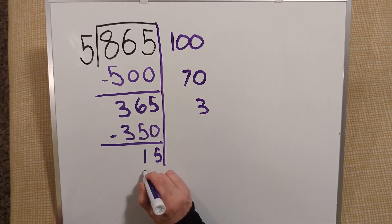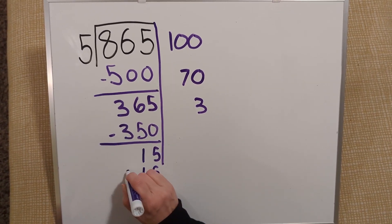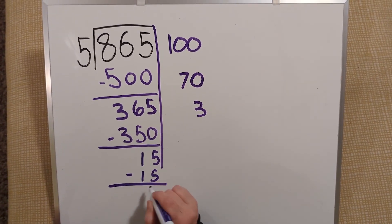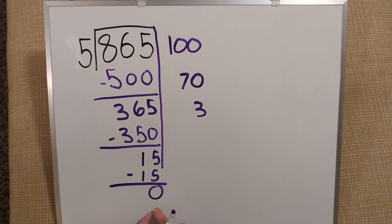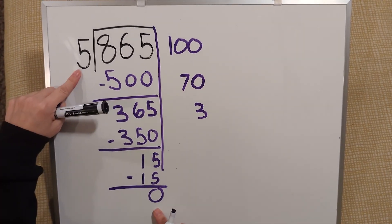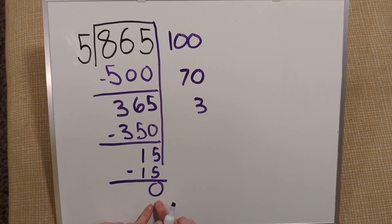3 times 5 is 15. I subtract that off. 15 minus 15 is 0. My leftover dividend is smaller than 5. It's at 0. I can't go any further.